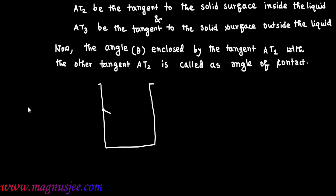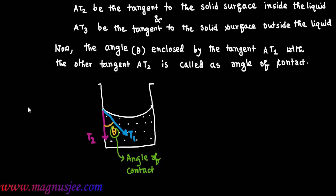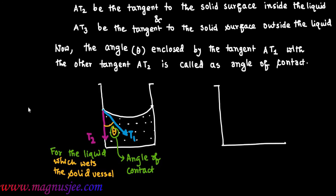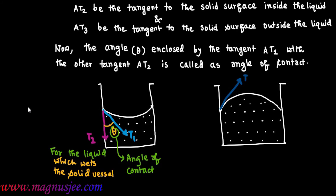We can draw the diagram again. This is the glass vessel and water is placed in it, which wets the wall of the container. We draw tangent T1 on the liquid surface and T2 on the solid surface of the container inside the liquid. Angle theta is the angle of contact for the liquid which wets the solid vessel. For mercury, we draw tangent T1 on the liquid surface and T2 on the solid surface inside the liquid.